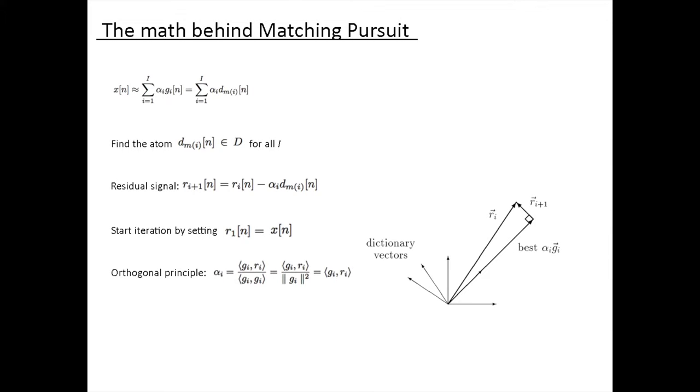The figure to the right shows the principle. We find the atom that best approximates the signal, and then we find the length that minimizes the distance between the two vectors. This gives us the alpha, or weight, of the atom.